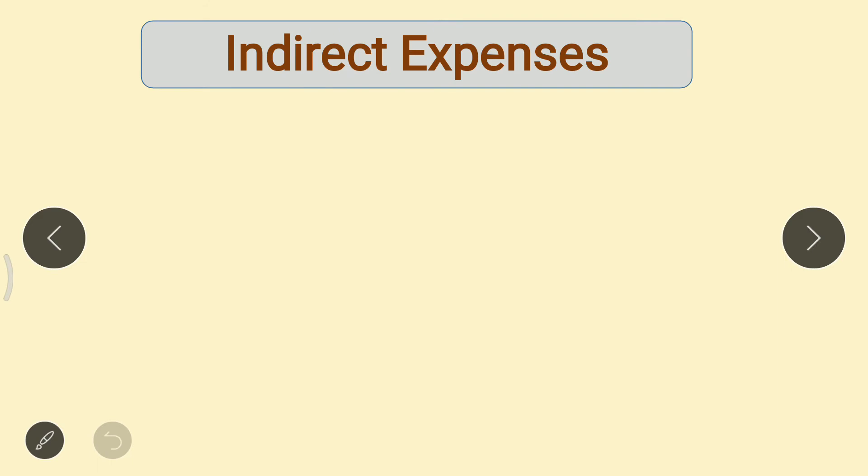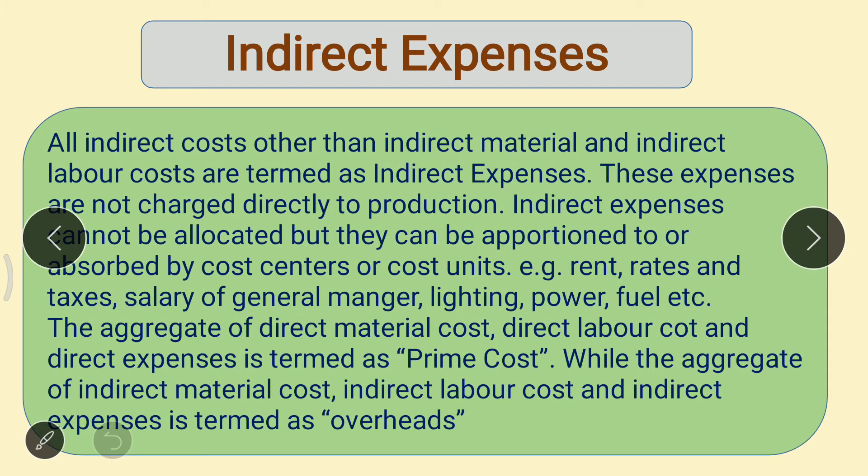All indirect costs other than indirect material and indirect labor cost are termed as indirect expenses. These expenses are not charged directly to production. Indirect expenses cannot be allocated, but they can be apportioned to or absorbed by cost centers or cost units. For example, rent, rates and taxes, salaries of general manager, lighting, power, fuel, etc.